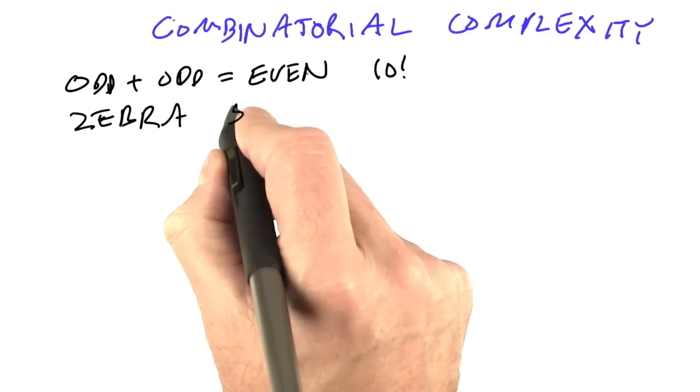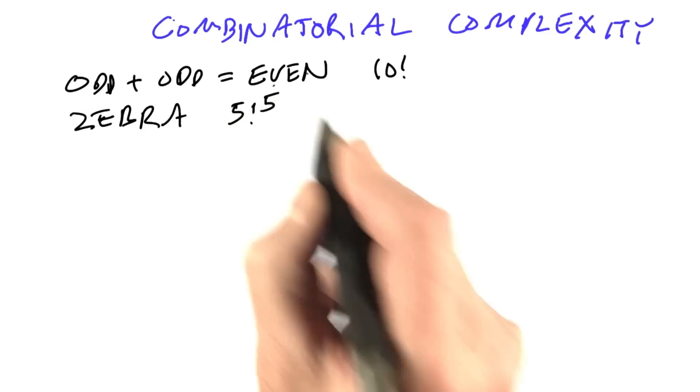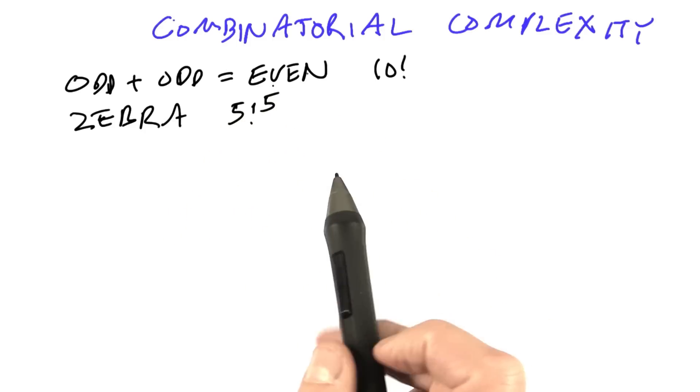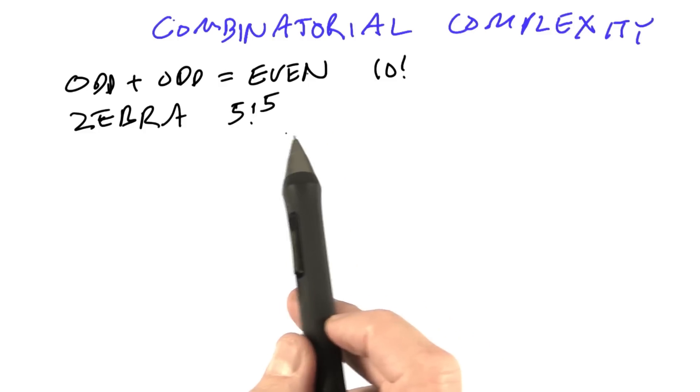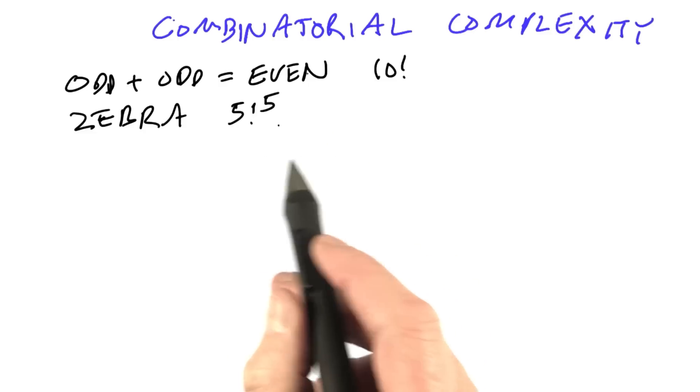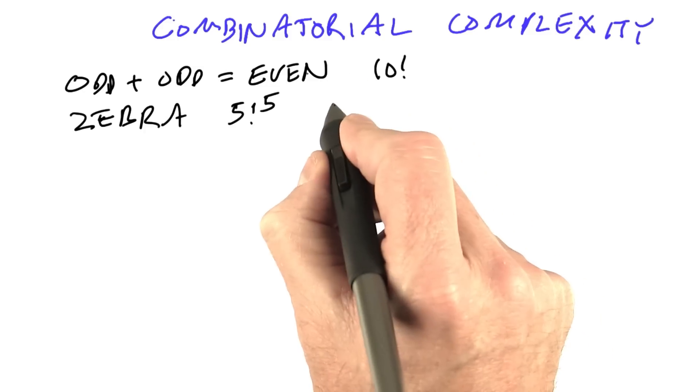In the zebra puzzle, we had 5 factorial to the fifth combinations to consider. And it was complex because it took a long time to consider them all. And we came up with an optimization to consider a few of them by going one at a time.